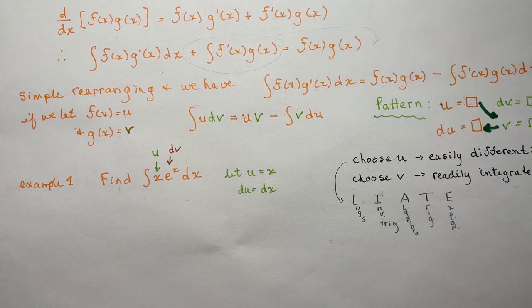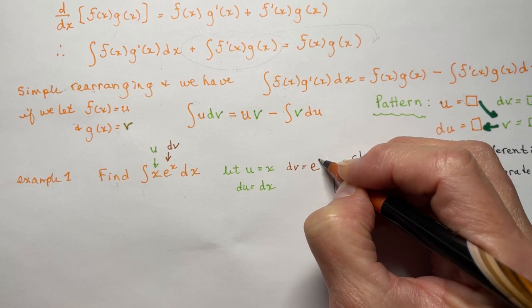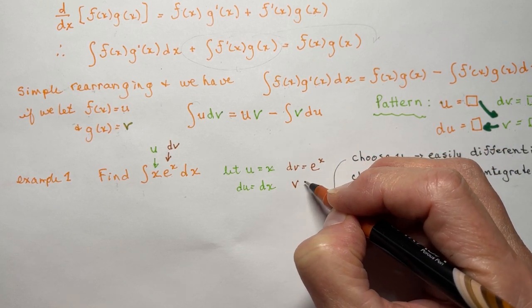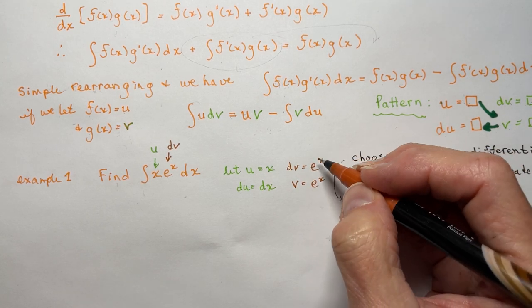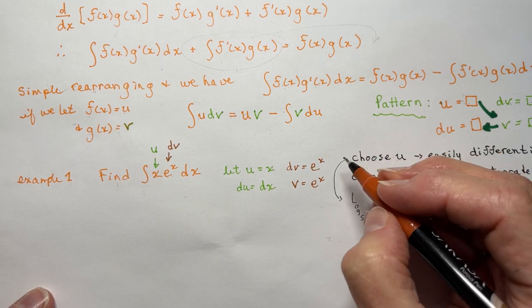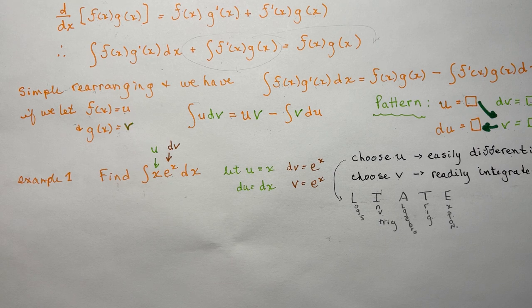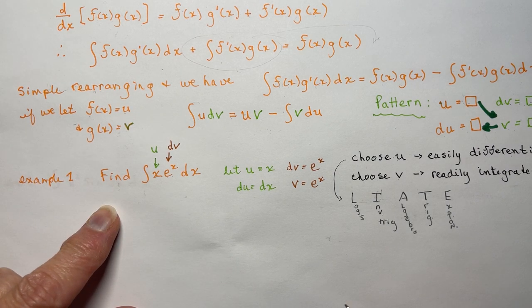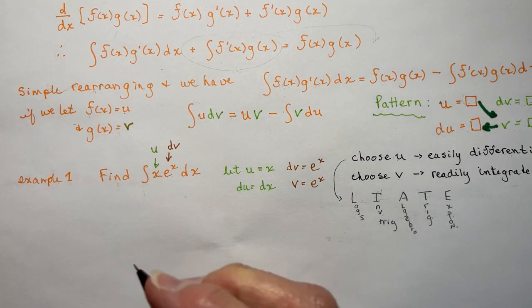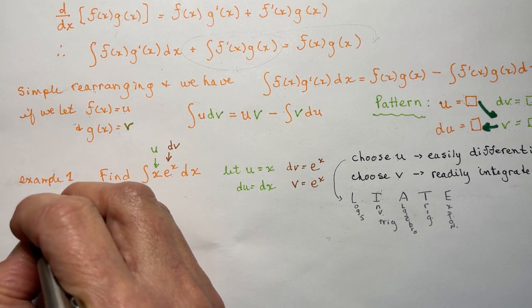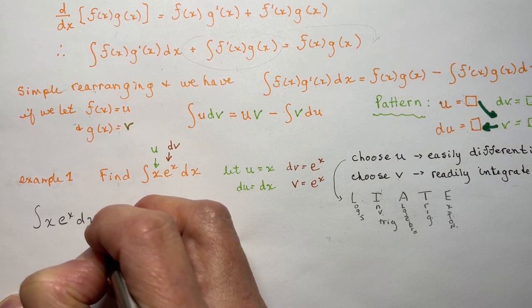So if dv equals e^x, then v is going to be also e^x, because the integral of e^x is e^x. Now there is a plus c in here, but we won't worry about that until we plug it in. So now I'm going to find the integral of x·e^x and write that out.